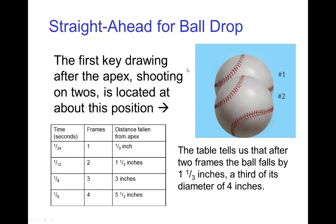So in a straight-ahead animation of a ball drop, if we were shooting on twos and this first key drawing was the apex, then two frames later the ball would be roughly here, which is about the width of two fingers. It happens to be about a third of the diameter of this ball.